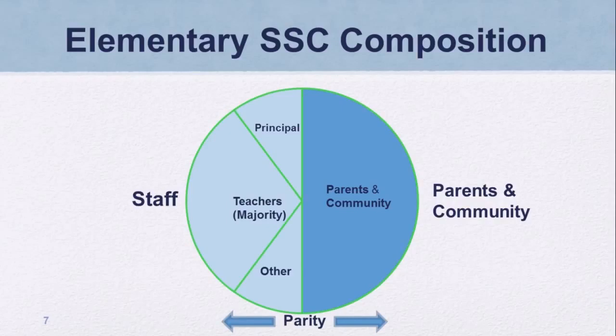Teachers must comprise the majority of the staff half. In order to adhere to the teacher majority requirement, a minimum of five members are needed for the staff half. Teachers must be selected by teachers at the school, and other school personnel must be selected by other school personnel. On the parent half, parents of pupils attending the school or other community members must be selected by such parents. Adherence to each of these member group requirements results in a minimum of 10 members for the elementary school site council.